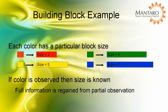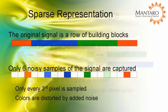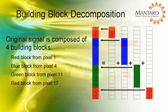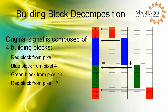A unique signal is created by arranging the building blocks. This signal and accompanying noise is then sampled, whereby every third pixel was measured and the color recorded. Let's rotate the signal such that we can observe how each of the building blocks are arranged spatially to create it.